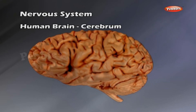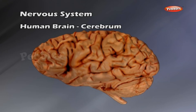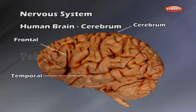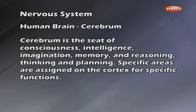The white matter is composed of bundles of nerve fibers. The cortex shows folds called gyri. The shallow grooves between the gyri are known as sulci. Each cerebral hemisphere is divided into four lobes: frontal at front, parietal at the top, temporal on the side, and occipital at the rear. Cerebrum is the seat of consciousness, intelligence, imagination, memory, reasoning, thinking, and planning. Specific areas are assigned on the cortex for specific functions.